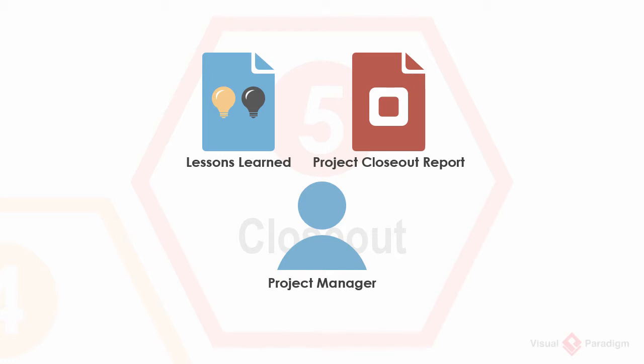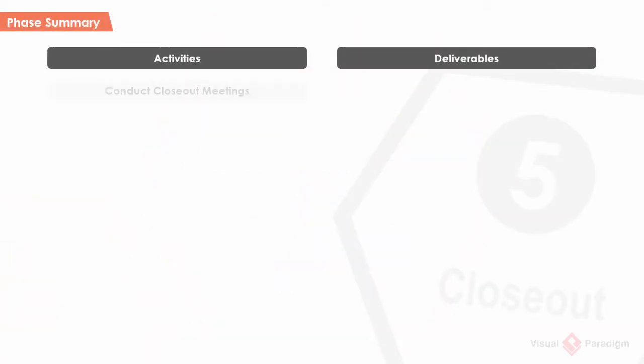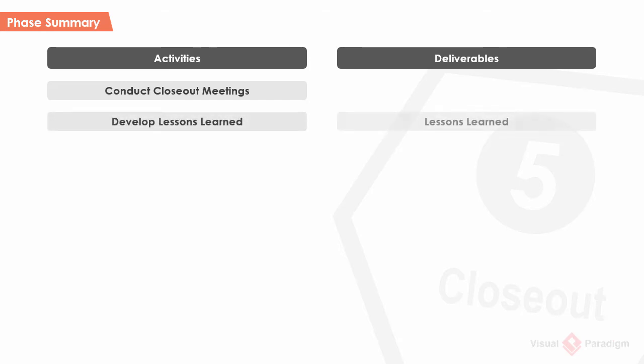Let's have a look at the activities of this phase. The first activity is to conduct closeout meetings with different project participants, collecting and discussing their feedback so that lessons learned are captured. These meetings also help the project manager in developing a plan for project transitioning. With the information collected, the project manager will develop a lessons learned document describing things that went wrong and well throughout the project lifecycle, with recommendations.